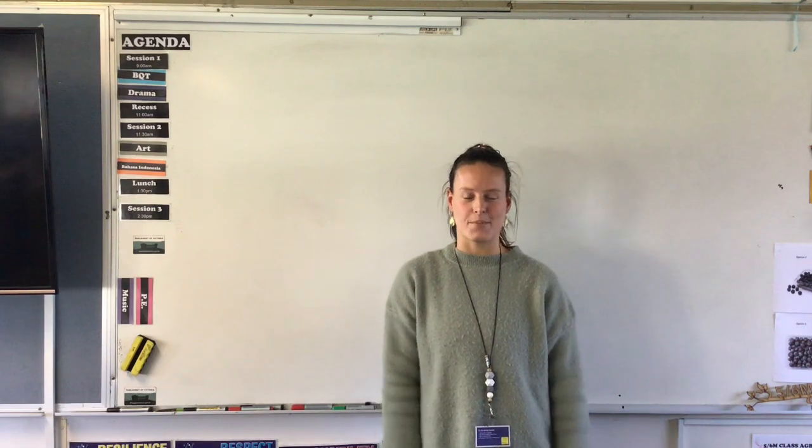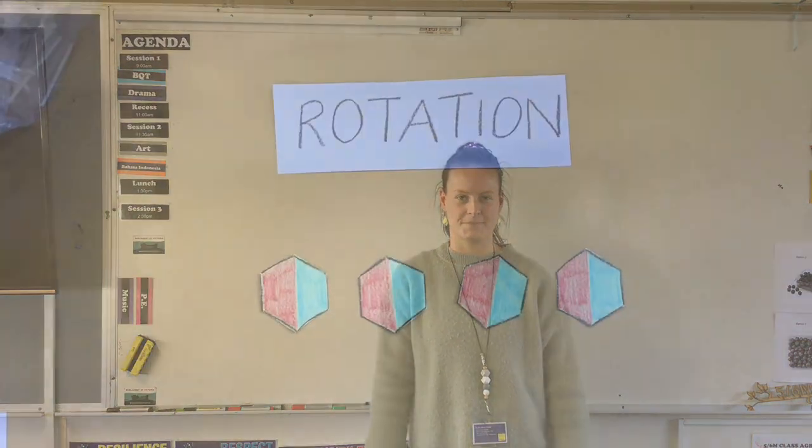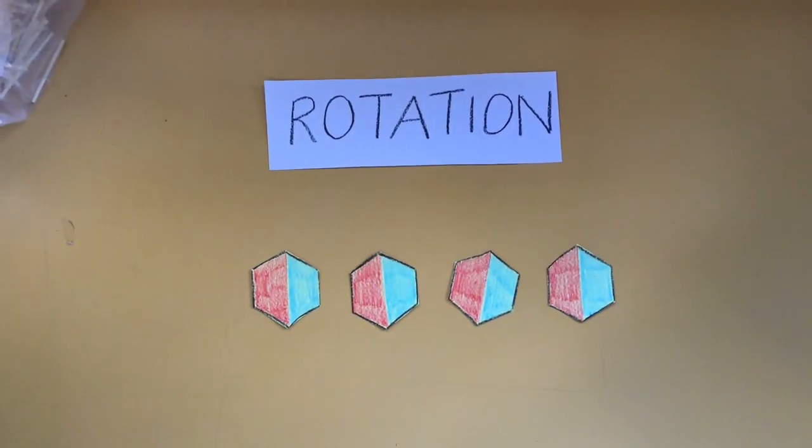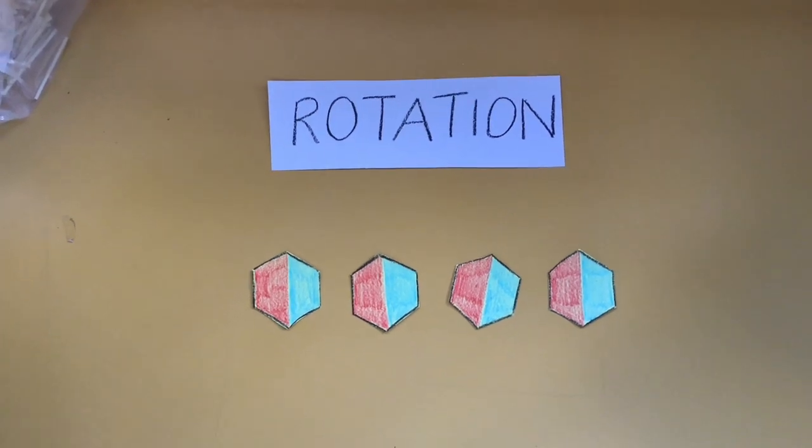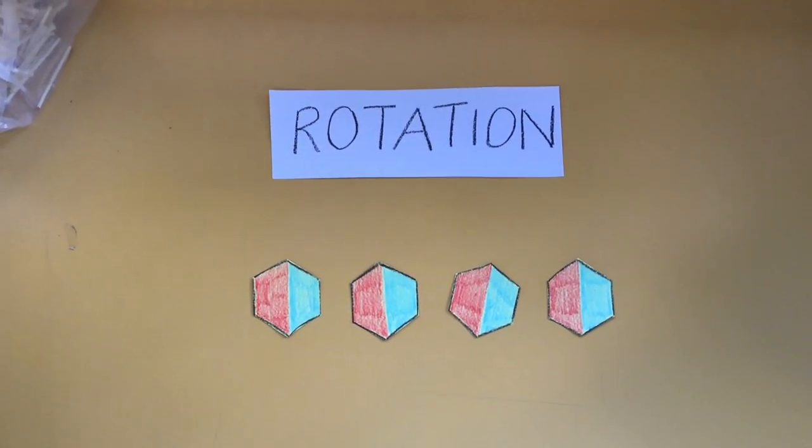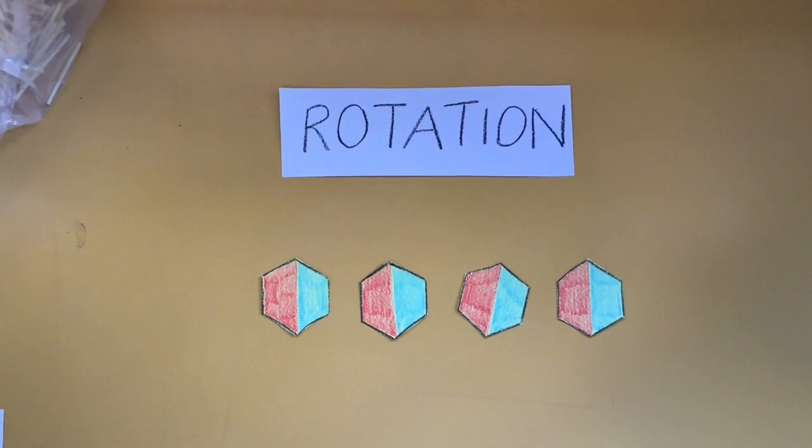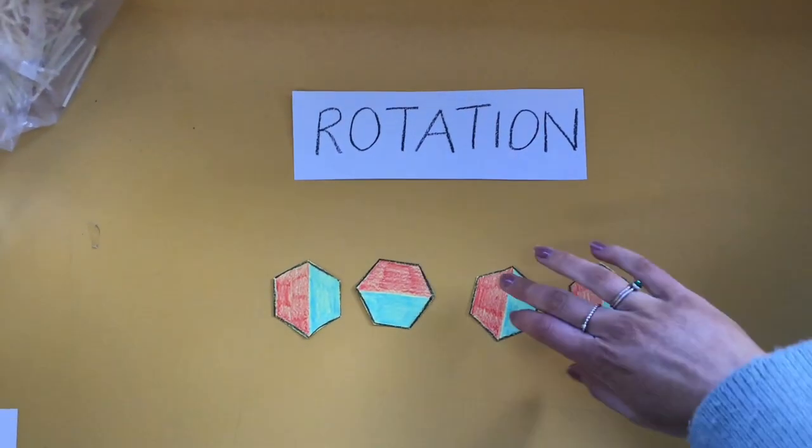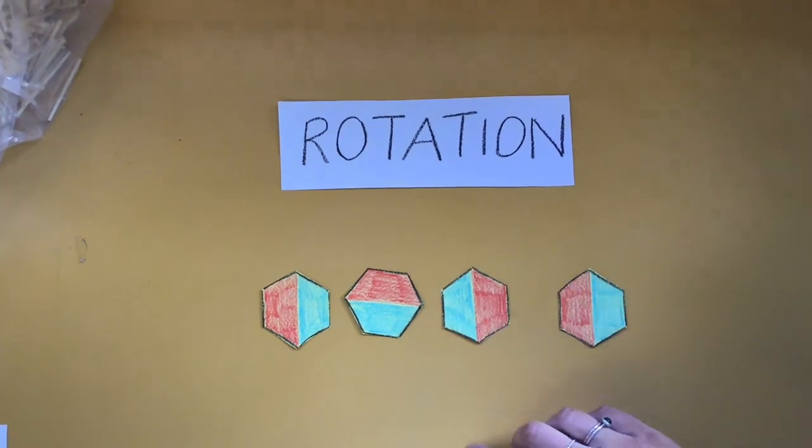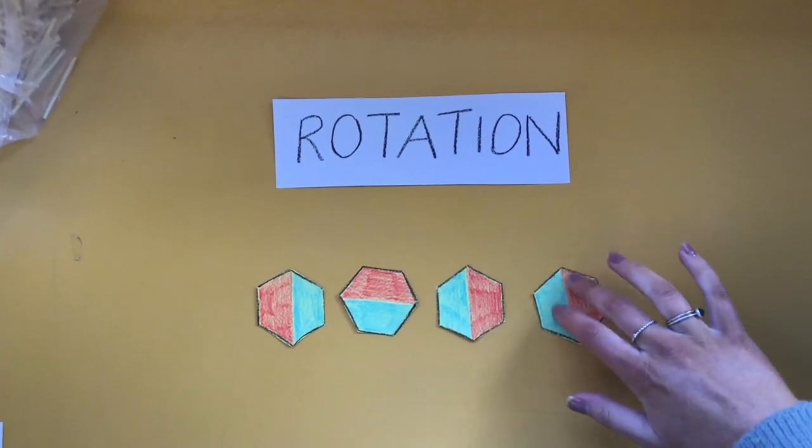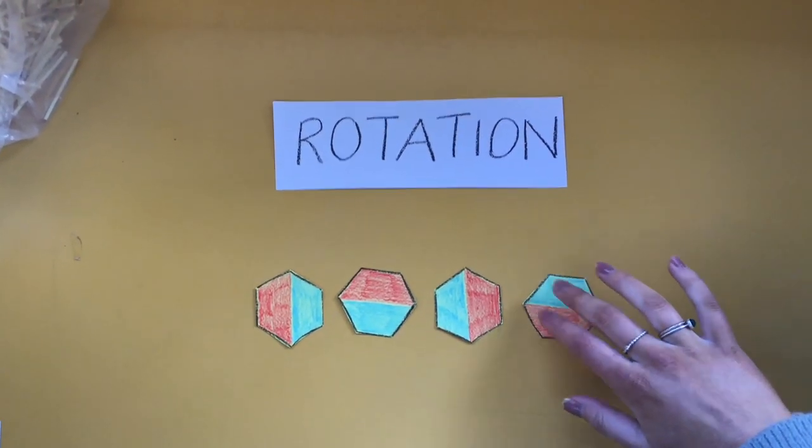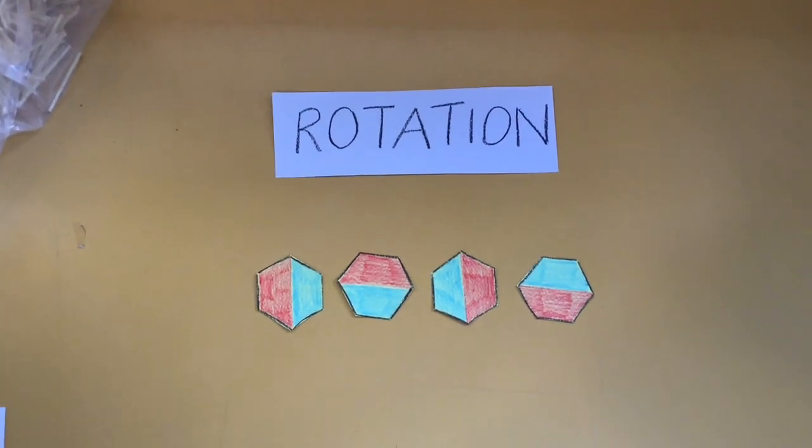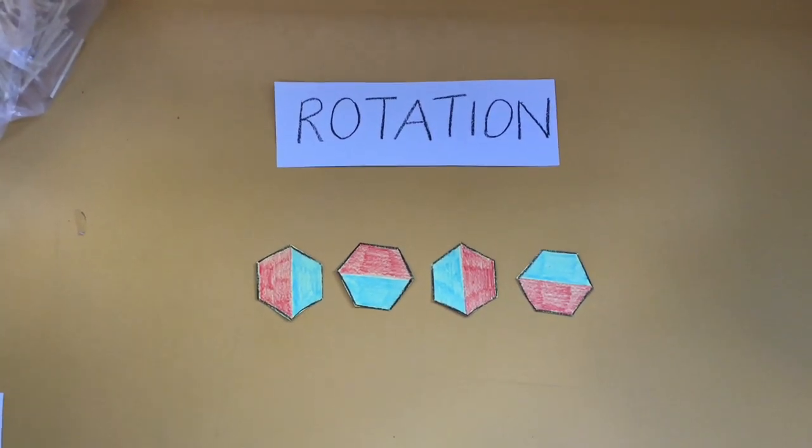Then you'll need to get three separate pages in your maths book ready. Your first page will be titled Rotation and you will use your coloured shapes to clearly demonstrate rotation including a quarter turn, a half turn and a three quarter turn. You can also use the words clockwise and anti-clockwise to describe which way you're turning.